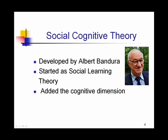The social cognitive theory was developed by Albert Bandura. It started as the social learning theory — that was the first title for it — and that work began in the 1960s. He later added a cognitive dimension to his theory, which is when it became the social cognitive theory.